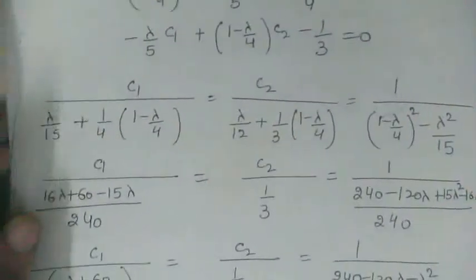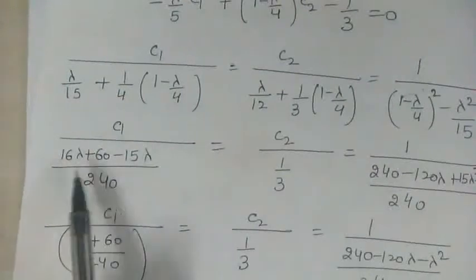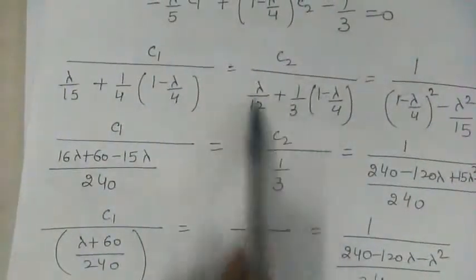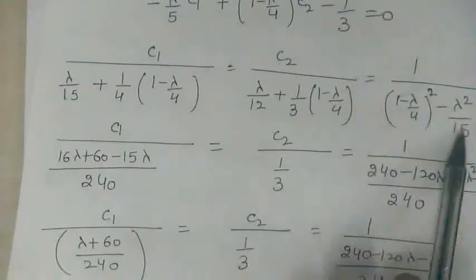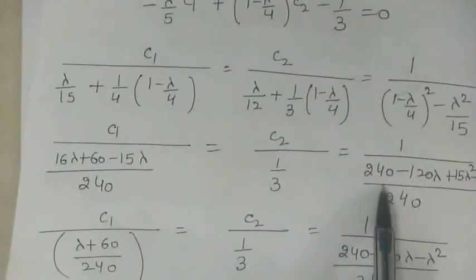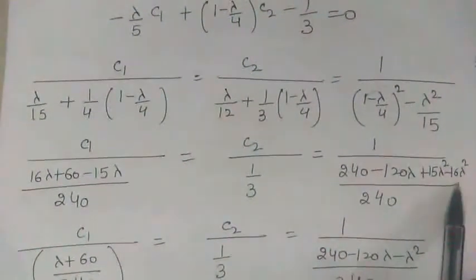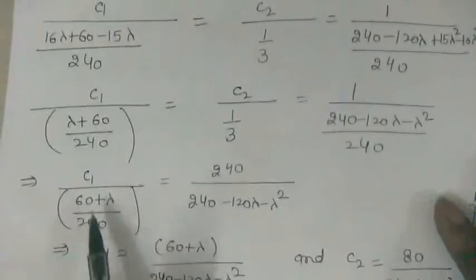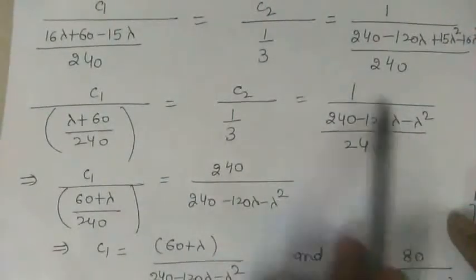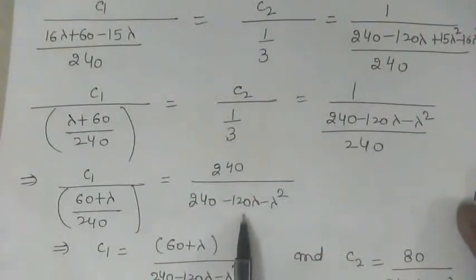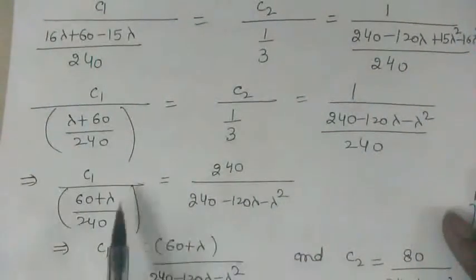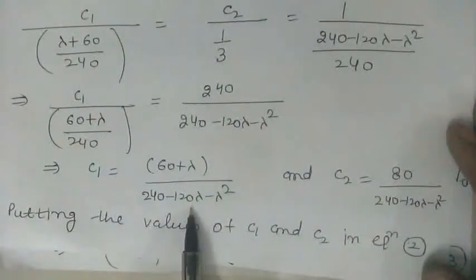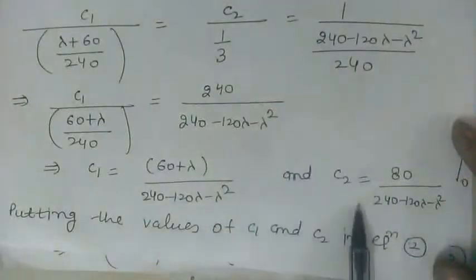After taking the LCM and simplifying, we get c₁/(60 + λ)/240 equal to the third term 240/(240 − 120λ − λ²). Expanding and simplifying further gives the denominator as 240 − 120λ − λ². From this, we obtain the value of c₁ = (60 + λ)/(240 − 120λ − λ²), and similarly c₂ = 80/(240 − 120λ − λ²).